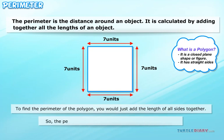So, the perimeter of this square is 7 plus 7 plus 7 plus 7 equals 28 units.